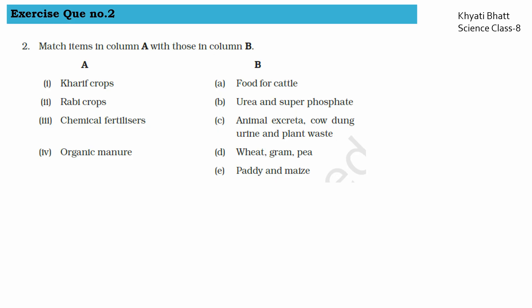Question number two: match the items in column A with those in column B. Kharif crops from column B — the two groups are wheat, gram, and pea in the first group, and paddy and maize in the second group. Kharif crops are paddy and maize.